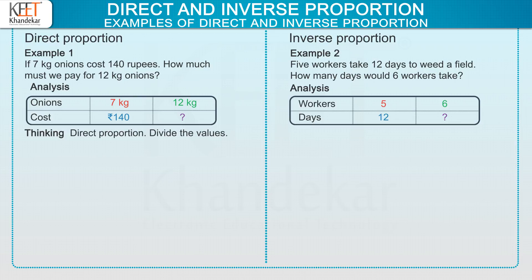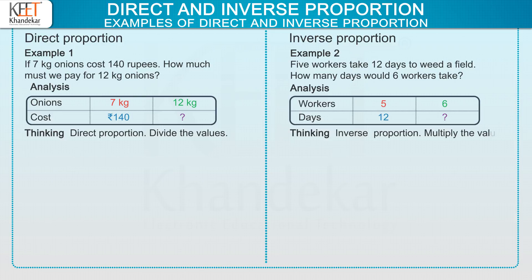So divide the values. Now in example 2, we note that the number of workers are increased from 5 to 6. So what will be its effect on the number of days? Definitely, as the number of workers increases, the time required to complete the work must decrease. Thus, here we note that if one value increases, the other value decreases. Therefore, we have inverse proportion in example 2, so multiply the values. Thus, in example 1 we have direct proportion and we must divide the values, and in example 2 we have inverse proportion and we must multiply the values.